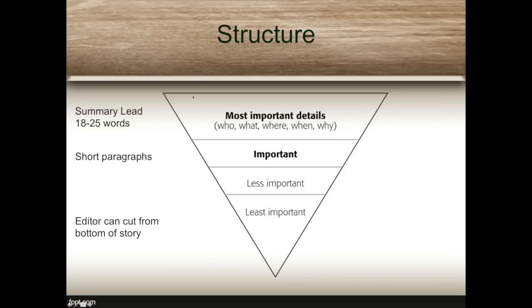At the top of the inverted pyramid, you have the most important details. Sometimes that can be who and what, or where, or when, or why. Typically, it's not all of the answers to those questions. You have to figure out using news values what the most important information is. Don't try to cram everything into that first sentence or two — just the crucial information. Then we have less important information after that, continuing down in order of importance till at the end we have the least important information.